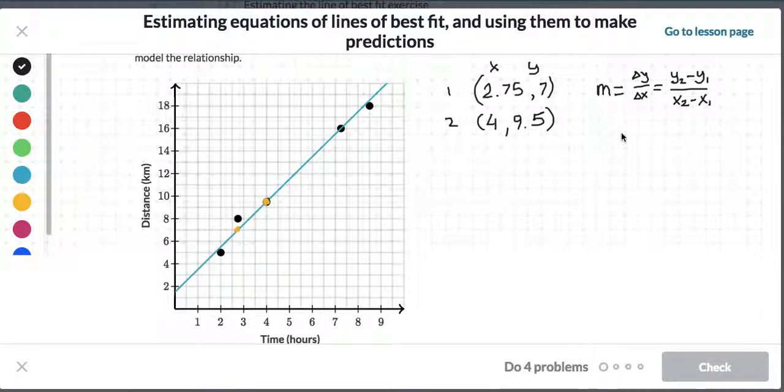x2 is 4, and x1 is 2.75. So 9.5 minus 7 is 2.5, and 4 minus 2.75 is 1.25.